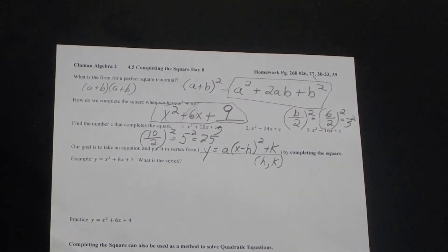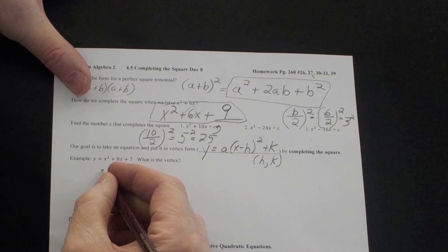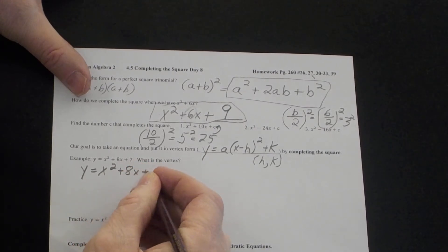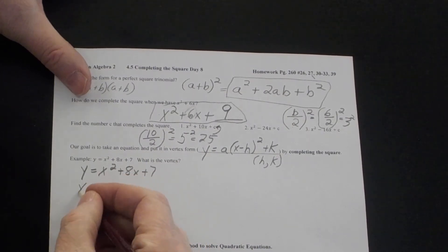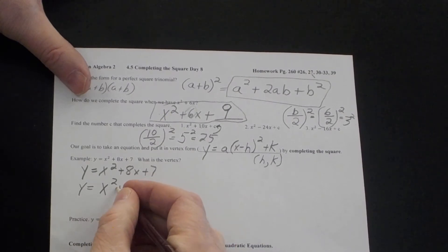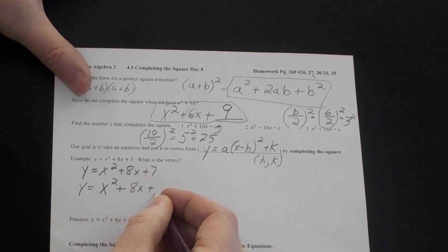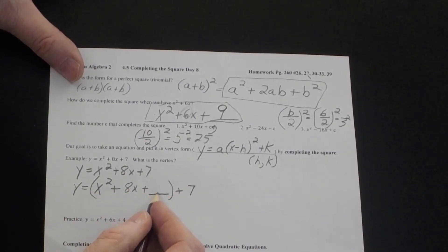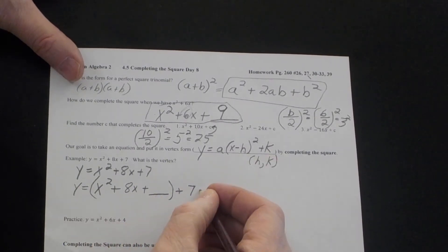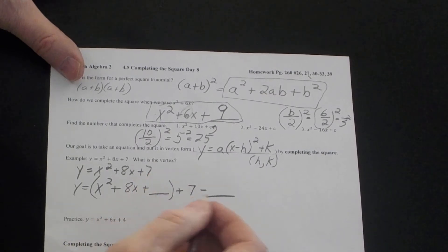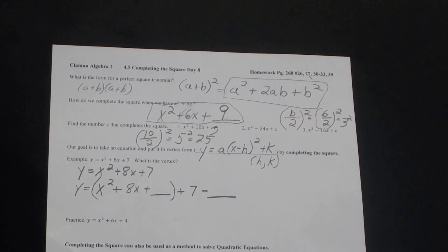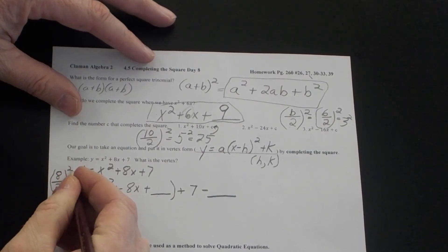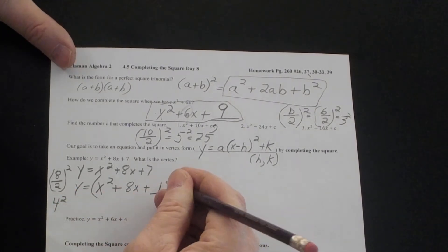In this example we take y equals x squared plus 8x plus 7. I'm going to take x squared plus 8x and complete the square, putting it in parentheses with the 7 on the outside. When I add a number inside, I need to subtract that same number outside so I don't change the problem. The b value here is 8, so we take 8 divided by 2 and square that: 4 squared. So I'm adding 16 inside the parentheses.